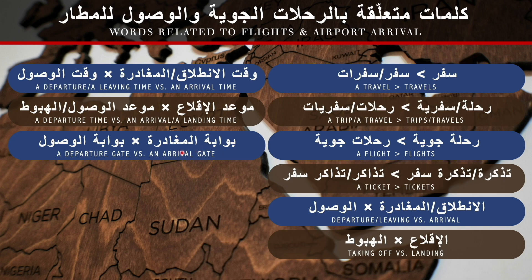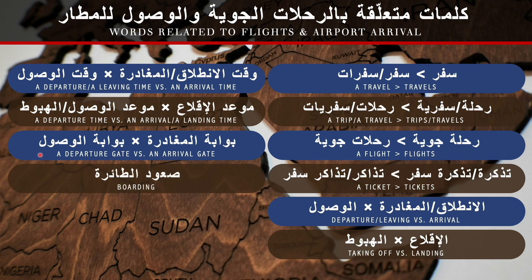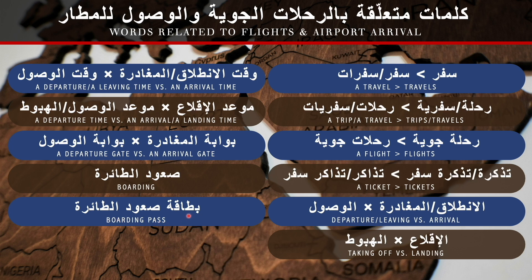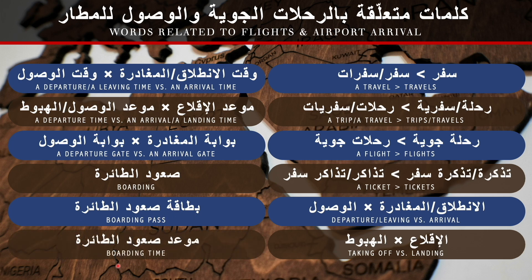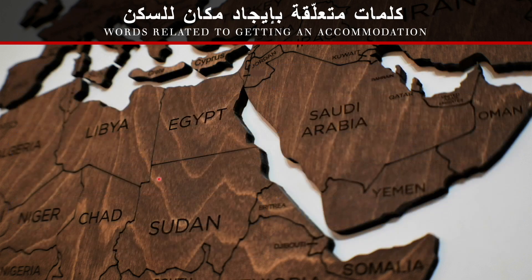A departure gate: بوابة المغادرة — we use المغادرة more than الانطلاق or الإقلاع in this context. An arrival gate: بوابة الوصول. Boarding — when riding an aeroplane: صعود الطائرة or just الصعود. A boarding pass: بطاقة الصعود, or specifically بطاقة صعود الطائرة. Boarding time: موعد الصعود, or موعد صعود الطائرة.